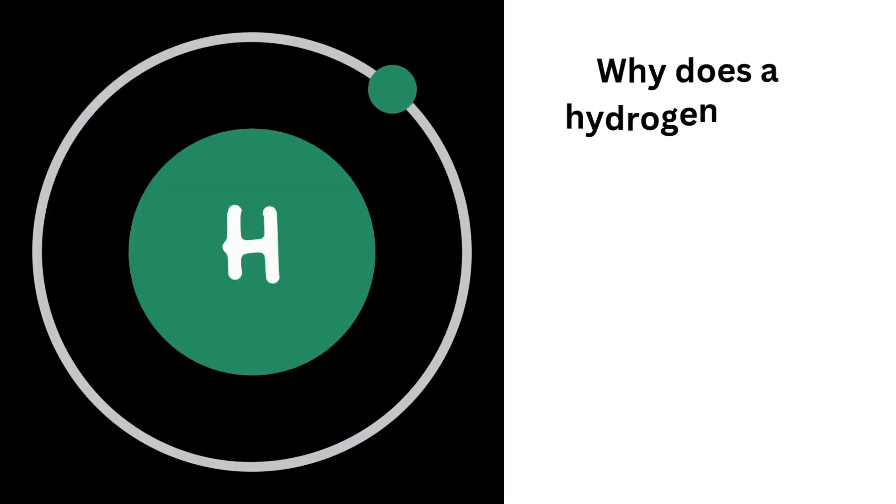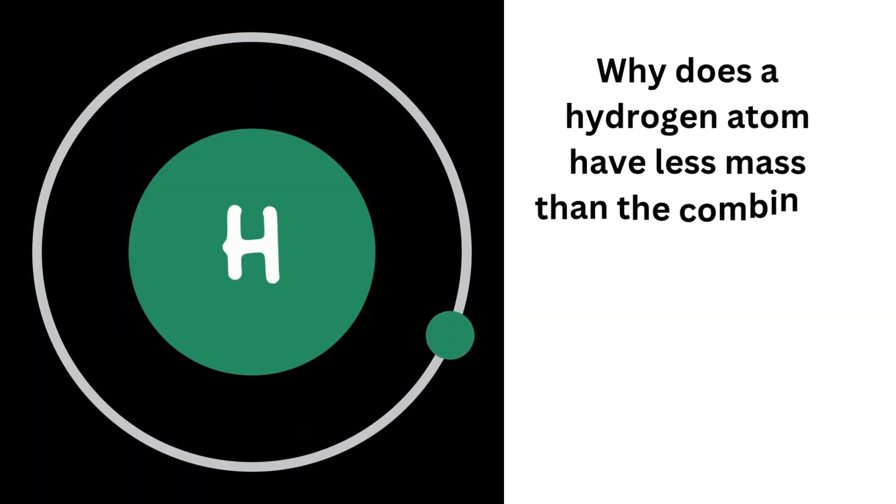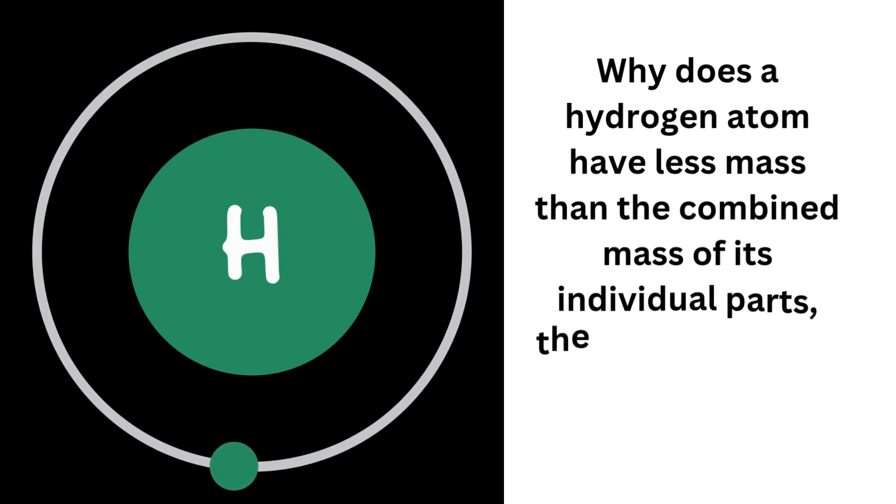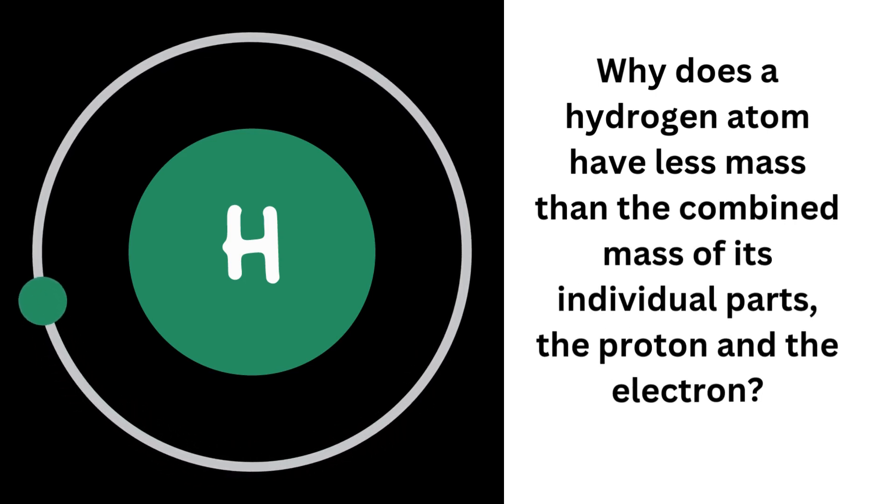Why does a hydrogen atom have less mass than the combined mass of its individual parts, the proton and the electron? Let's break it down.